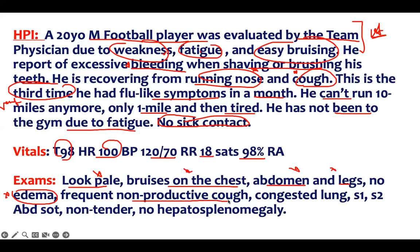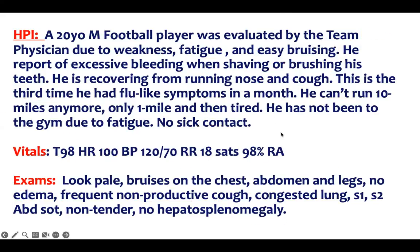He has a frequent non-productive cough — buzzword. He's coughing and looks congested. S1 and S2 are normal. The abdomen is soft, non-tender, no spleen enlargement, and the liver is not enlarged. So we have a patient who is weak, fatigued, has easy bruising, and is bleeding with just minor activity like shaving.